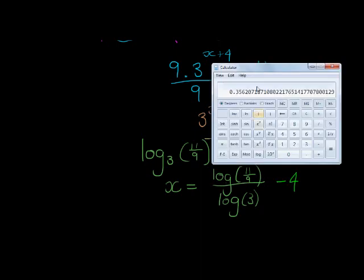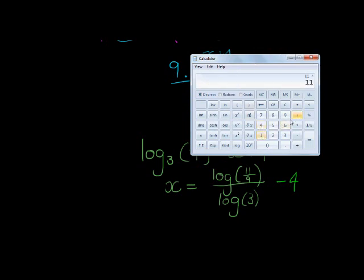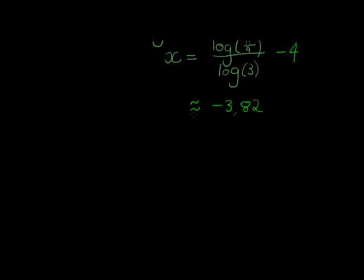Use my calculator: 11 over 9, 11 over 9 gives me 1 comma 2 2 2 2 2 2, take the log of that, divided by 3 log. That gives me an answer of 0 comma 1 8 2, and from that I'm just going to subtract 4 as well. So this time answer is negative. I get negative 3 comma 8 2, approximately negative 3 comma 8 2. There we go, not too bad. One more one and then we're done.